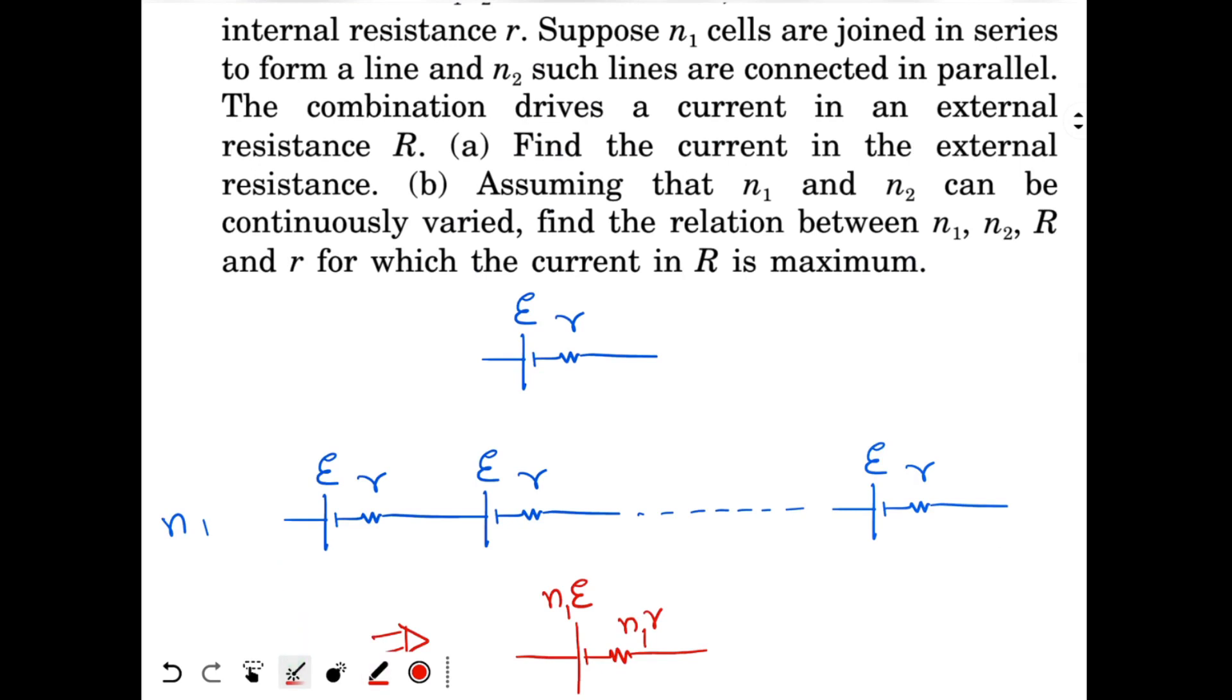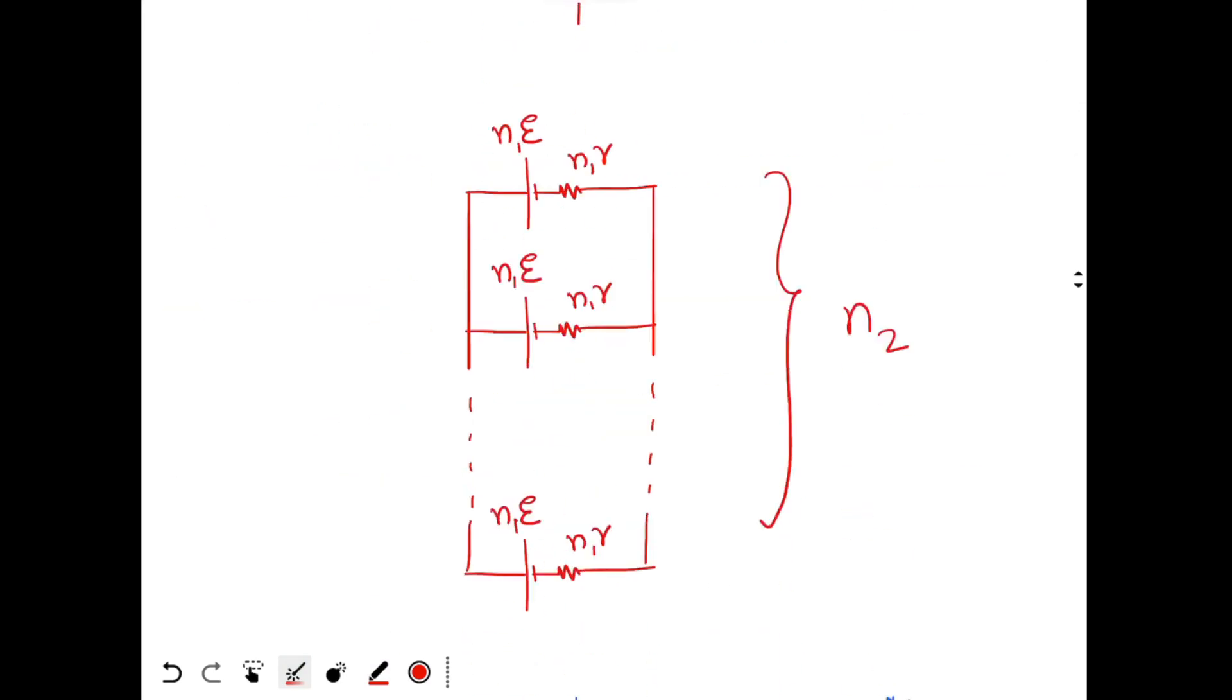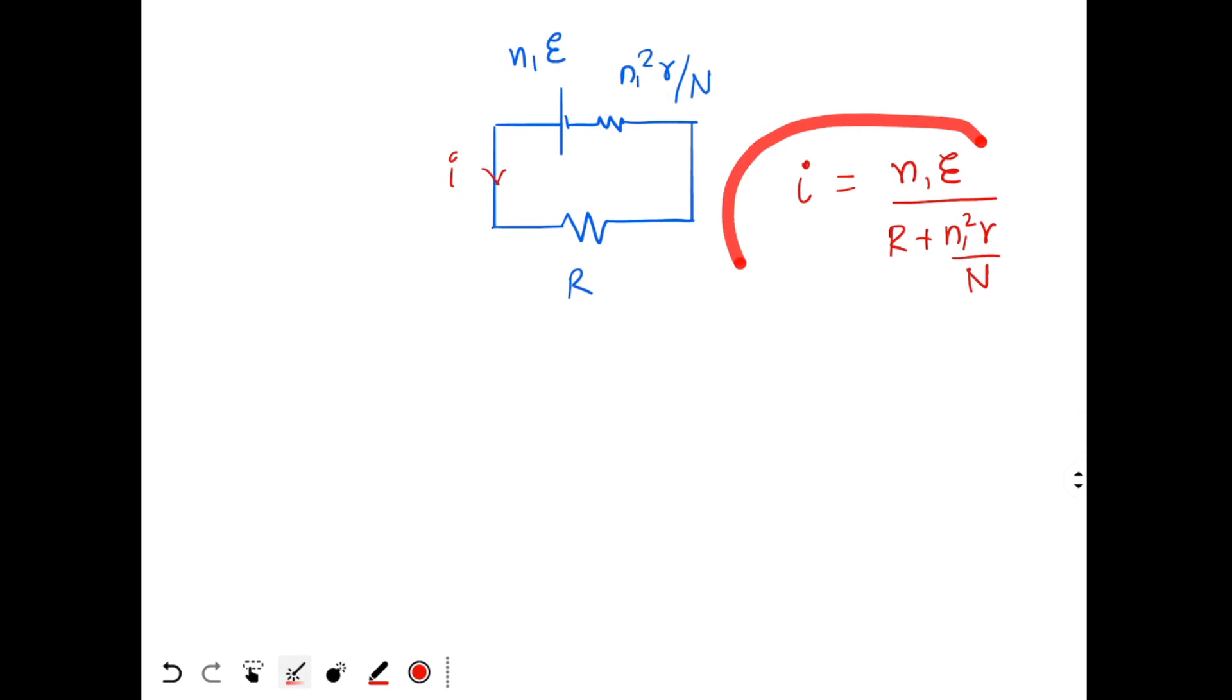Now what is part B asking? Assuming that N1 and N2 can be continuously varied, find the relation between N1, N2, R and small r for which the current in R is maximum.